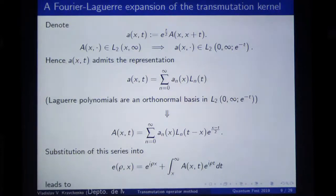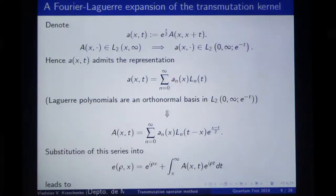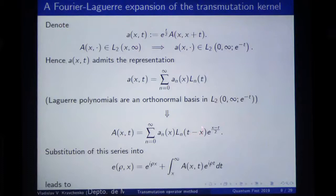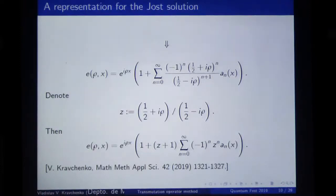Let us apply this. We come back to the kernel A capital and obtain for this kernel such a representation. We still don't know what to do with the coefficients, but we know that such a representation exists in the sense of L2 convergence. We can substitute it into the representation for the Jost solution. We will need to integrate only the Laguerre polynomials multiplied by exponential functions, and they can be integrated explicitly.